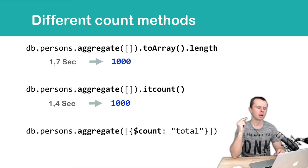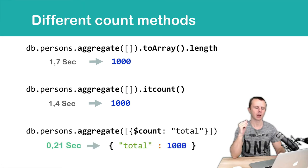And finally, aggregate with the count stage. We discussed this in the previous lesson. Just one stage, count total. And attention, this will take about 200 milliseconds and the result will be an object with a key-value pair total and the number of documents, which is 1000.